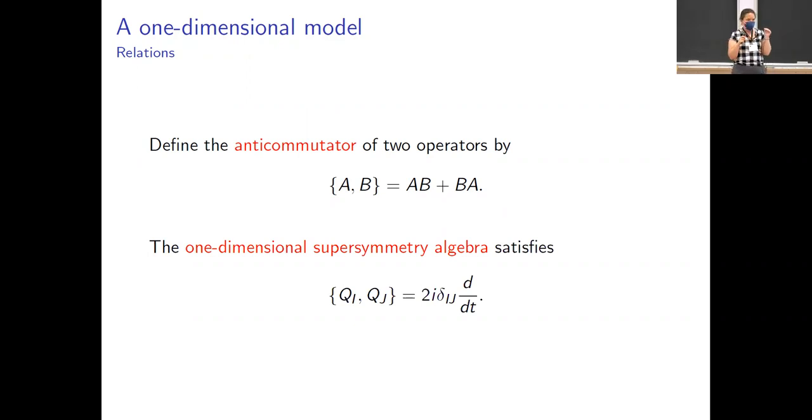And then a one-dimensional supersymmetry algebra is going to have an anticommutator that's just two times the square root of negative one times delta times the derivative with respect to T. So we're doing one-dimensional supersymmetry here. That means we have one time dimension and nothing else. Usually you would think that if you're stuck in zero dimensions spatially, nothing happens. But because this is quantum physics, weird stuff can still go on. And we're still going to see that we have all kinds of structure to play with here.